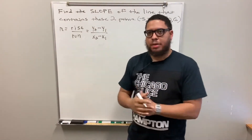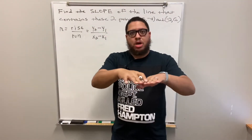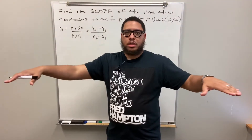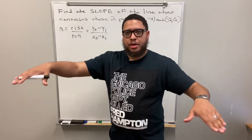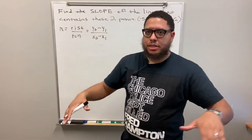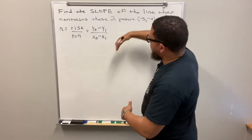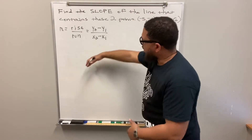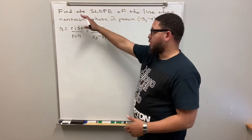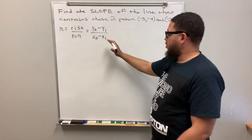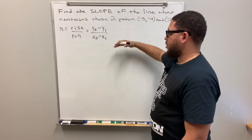The slope also tells us how flat or how slanted the line is going to be when we draw it. If the slope is zero, it's a horizontal line — very flat. If it's positive, the line goes upward. If it's negative, the line goes downhill.